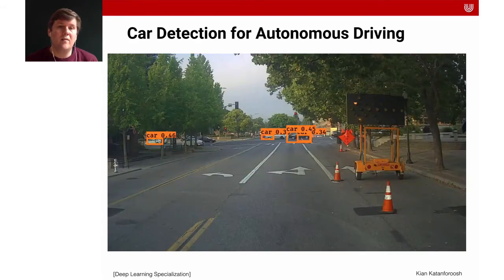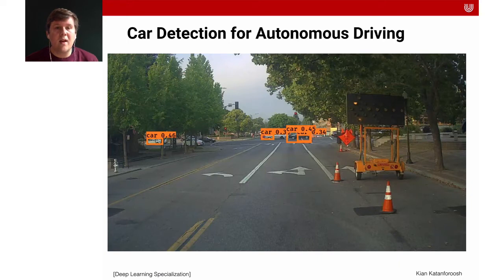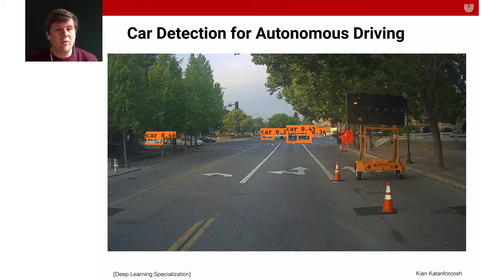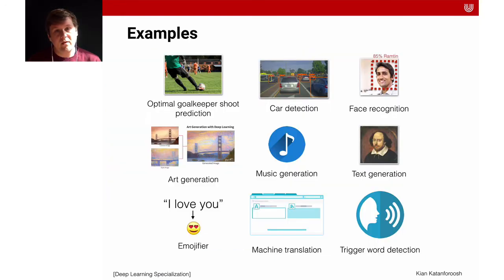Another example from autonomous driving is the detection of other cars. Think about how you would do this with a normal programming language — with if-then-else statements. How would you code a system that can distinguish a car, a cat, and a tree? It's quite challenging, but we will learn in this course how that's possible using machine learning.